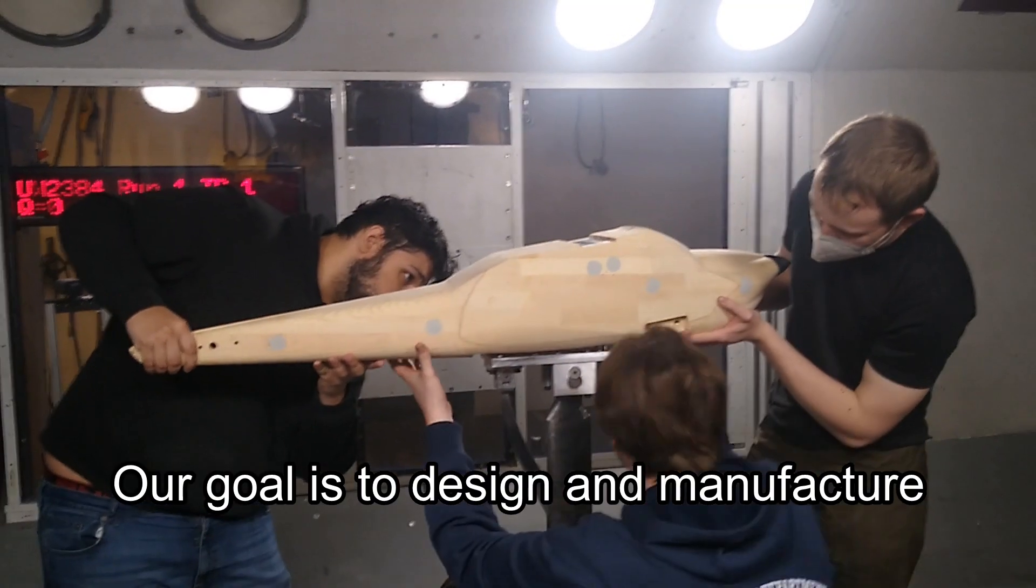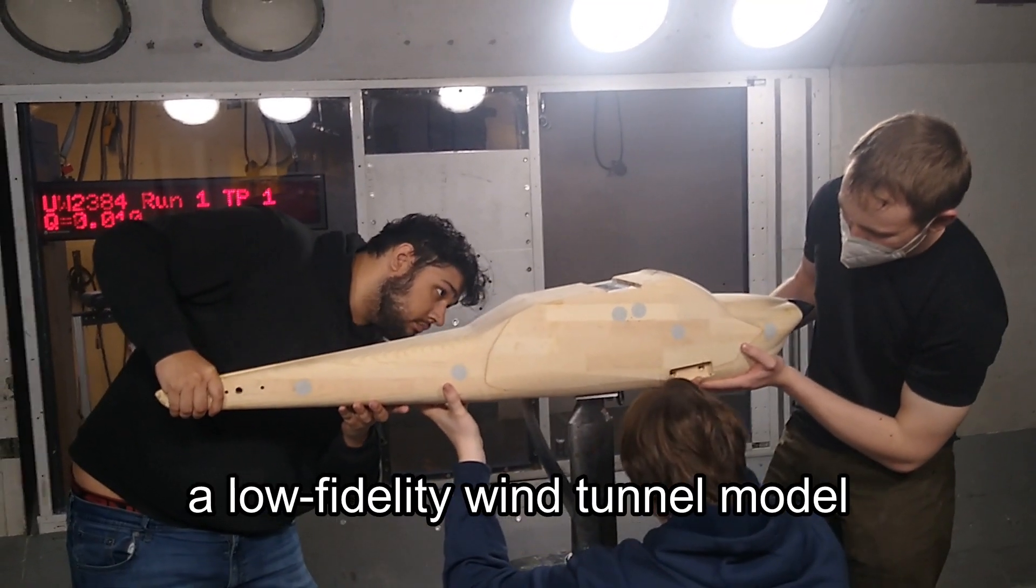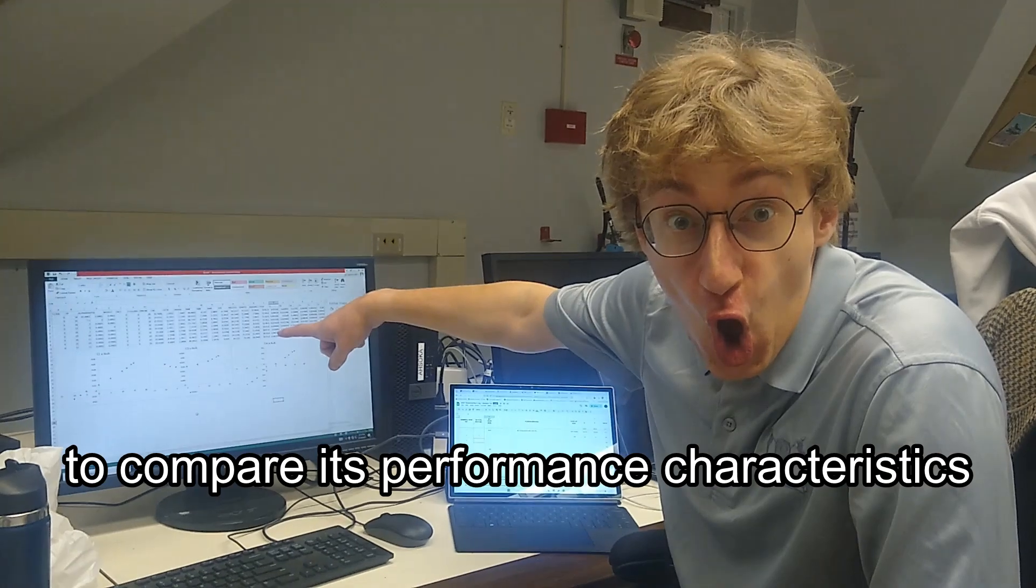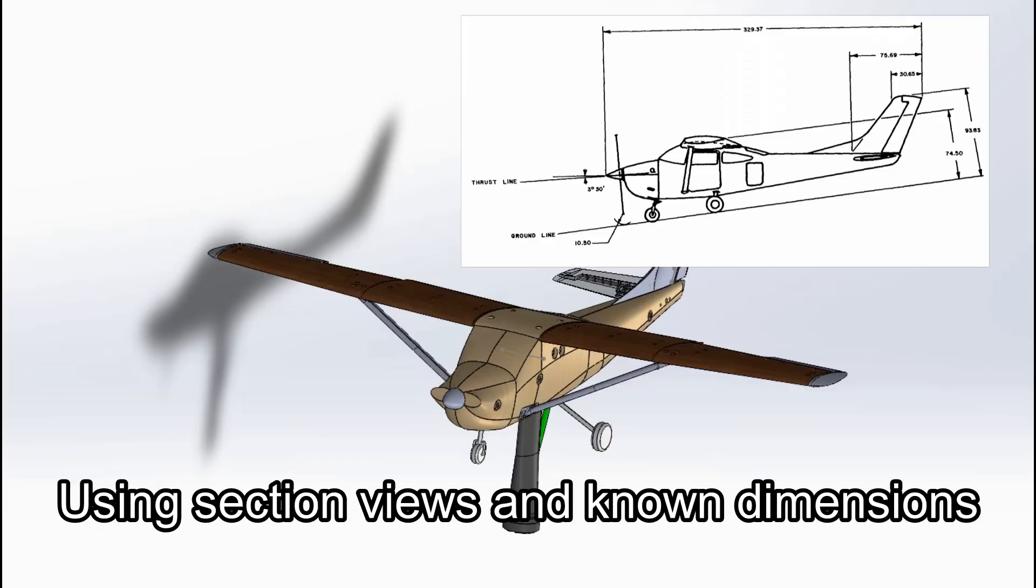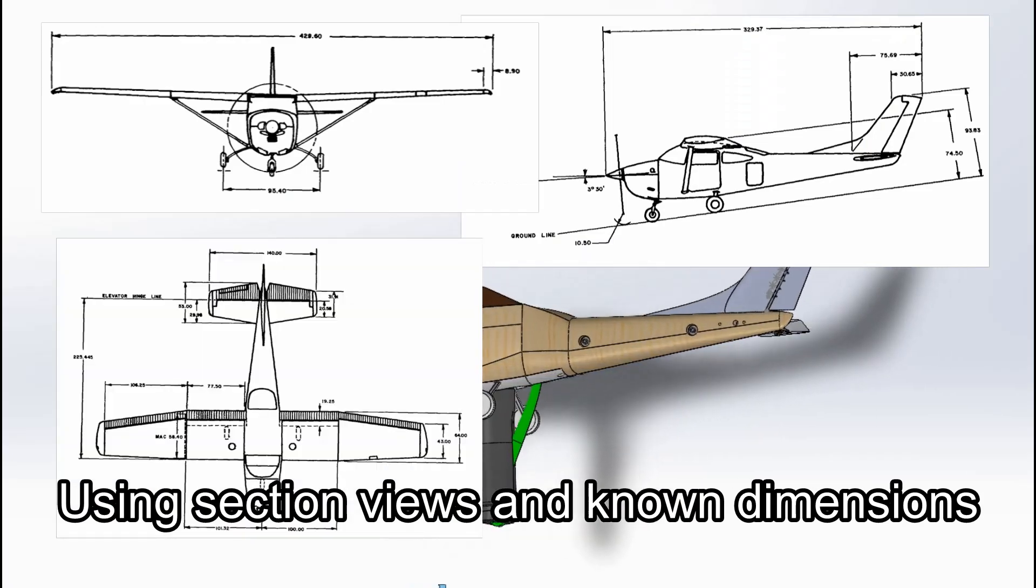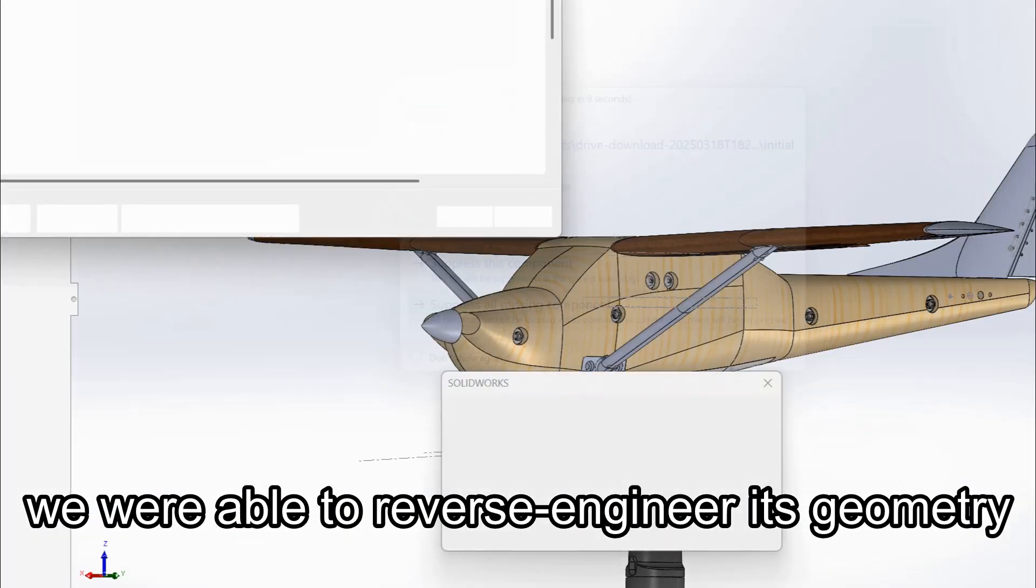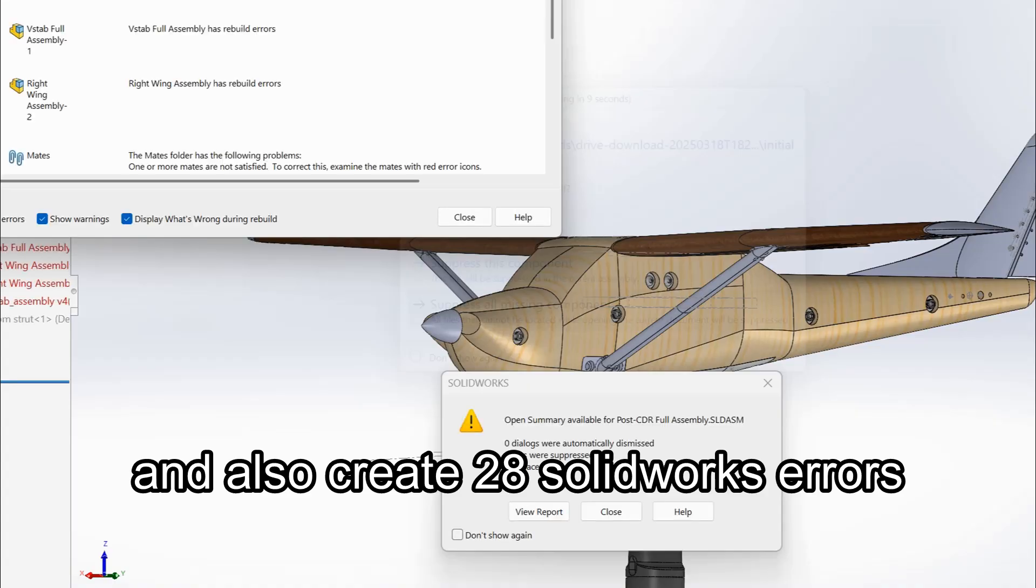Our goal is to design and manufacture a low-fidelity wind tunnel model to compare its performance characteristics with an existing dataset for the actual airplane that it's based on. Using section views and known dimensions for the Cessna, we were able to reverse engineer its geometry and also create 28 SOLIDWORKS errors.